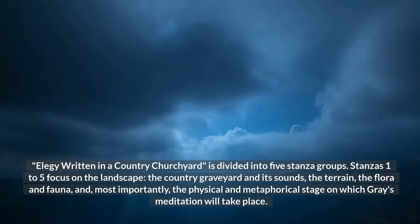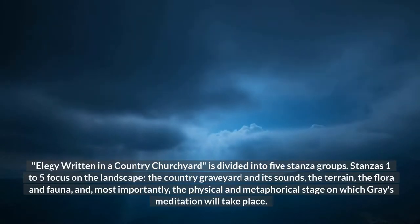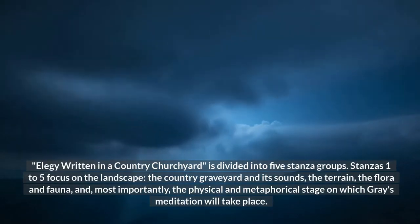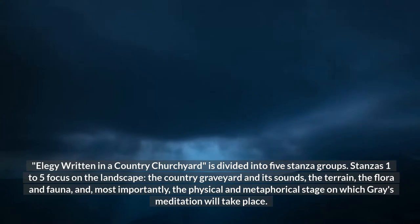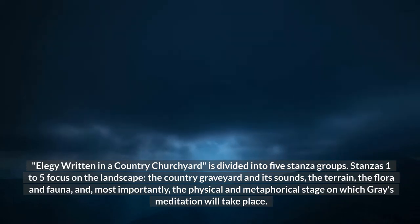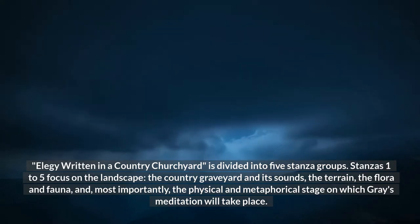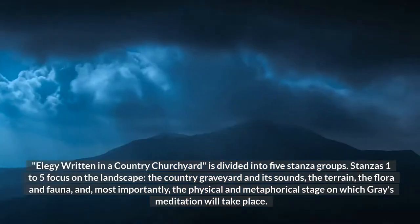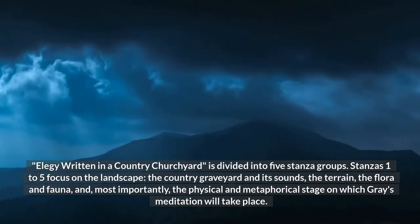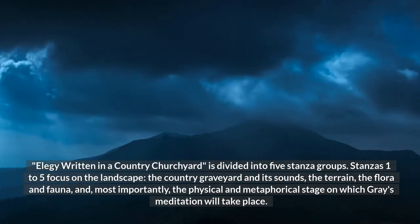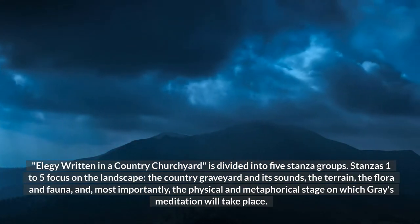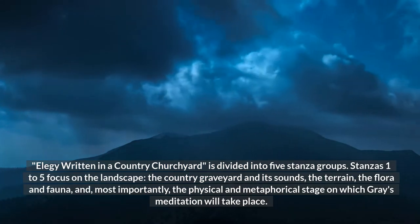Elegy Written in a Country Churchyard is divided into five stanza groups. Stanzas 1 to 5 focus on the landscape — the country graveyard, its sounds, the terrain, the flora and fauna — and most importantly, the physical and metaphorical stage on which Gray's meditation will take place.